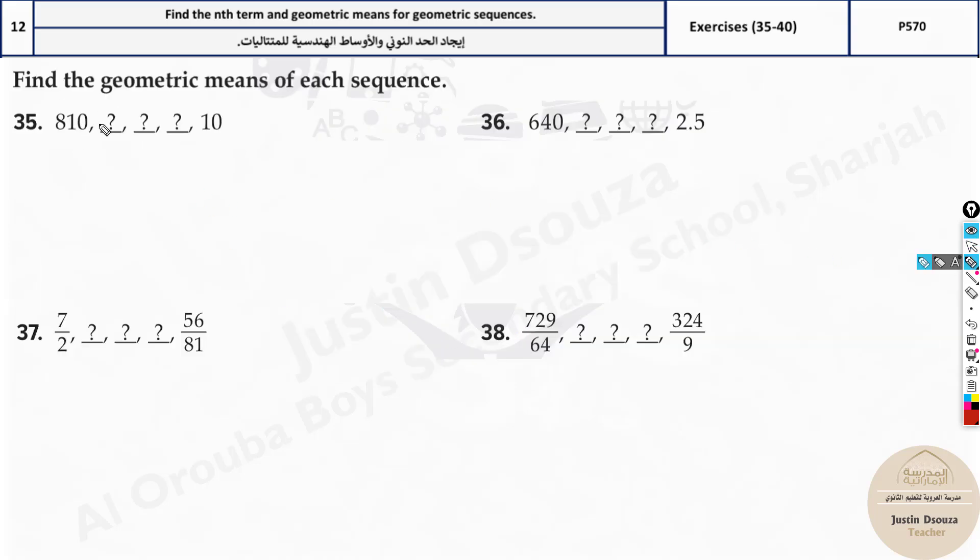So here we have some terms, the first and the last, and we need to find the terms in between. Now what can we do? We know only one formula for the geometric sequence: a_n equals a_1 r^(n-1). Can we find r? Can we find what is being multiplied? No, because we don't have the second term. To find r we need a_1, a_2. Any two consecutive terms, r will be second term divided by the first term. But now we can't do that.